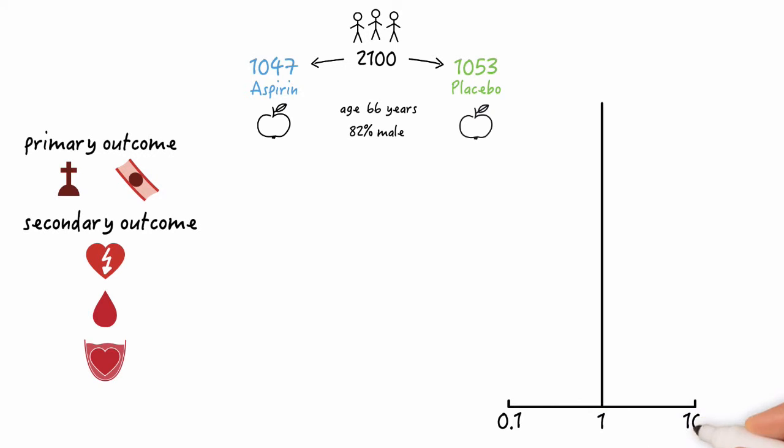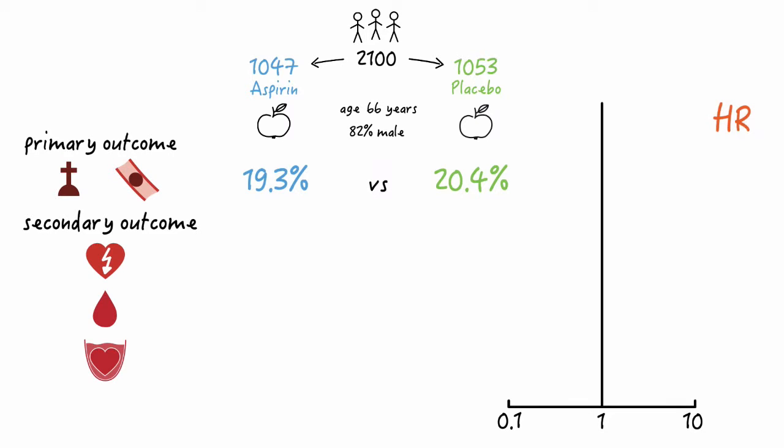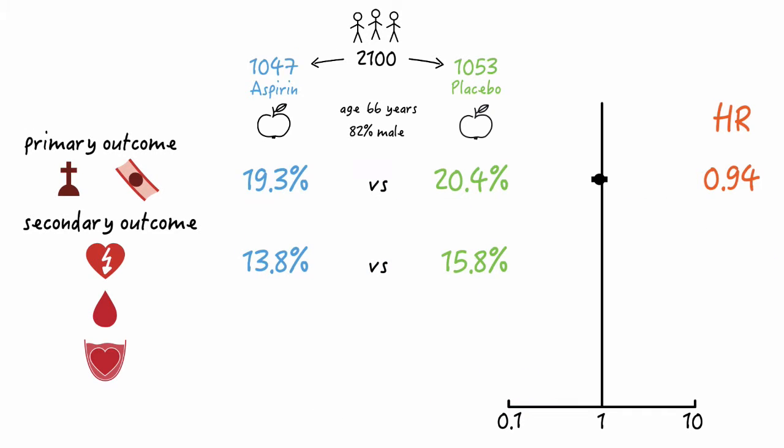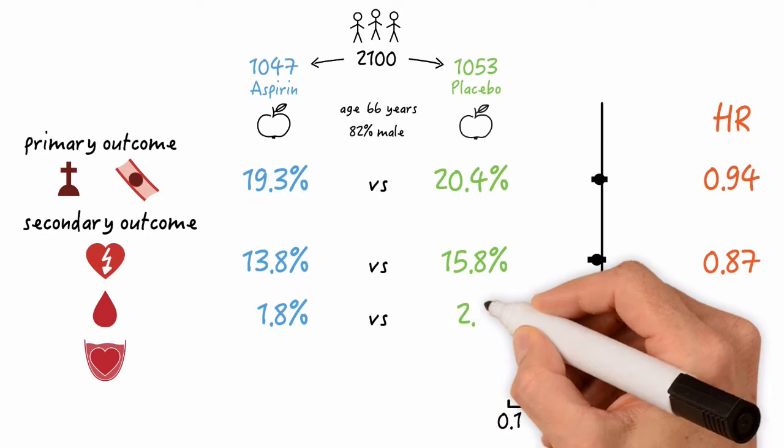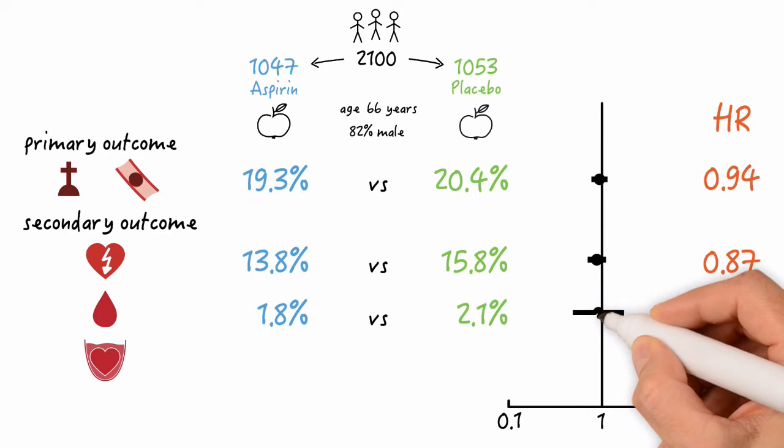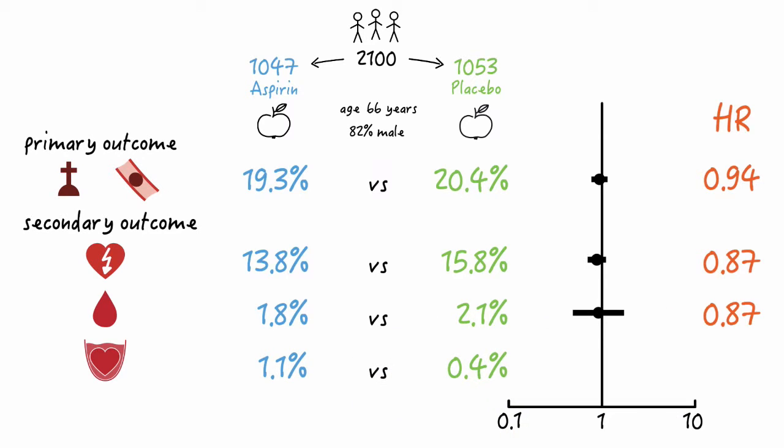The primary composite outcome occurred in 19.3% of patients receiving aspirin and 20.4% of patients receiving placebo. Hazard ratio 0.94. Myocardial infarction occurred in 13.8% of aspirin patients and 15.8% of placebo patients. Hazard ratio 0.87. Bleeding leading to re-operation occurred in 1.8 versus 2.1%, hazard ratio also 0.87. And cardiac tamponade occurred in 1.1% of aspirin patients versus 0.4% of placebo patients. Hazard ratio 2.77.